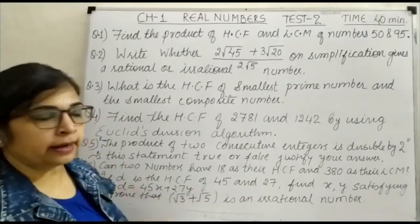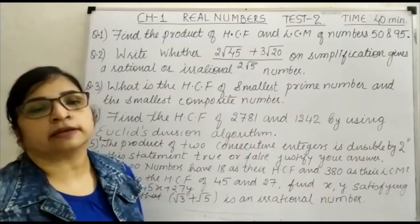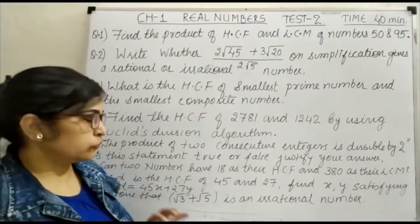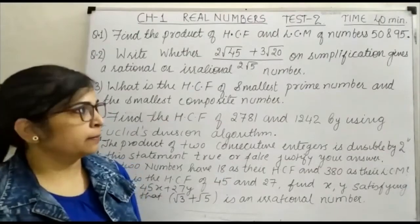Question number 8: prove that √3 + √5 is an irrational number. So you have to prove that √3 + √5 is an irrational number.